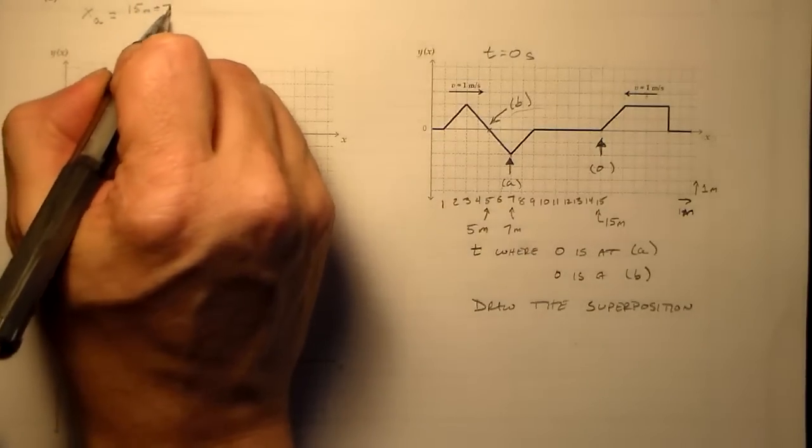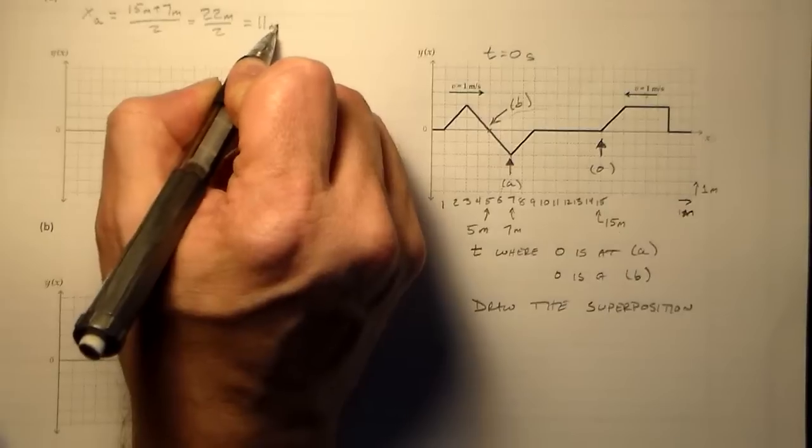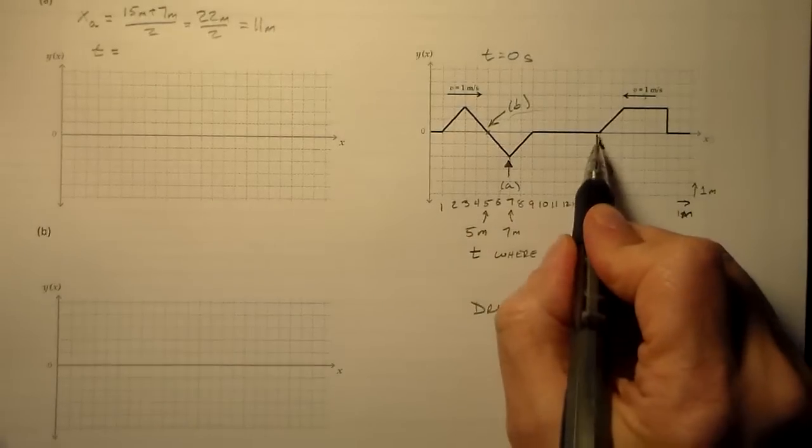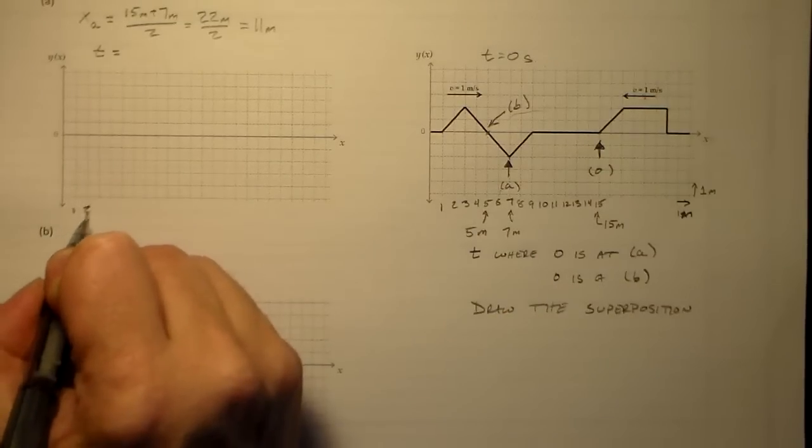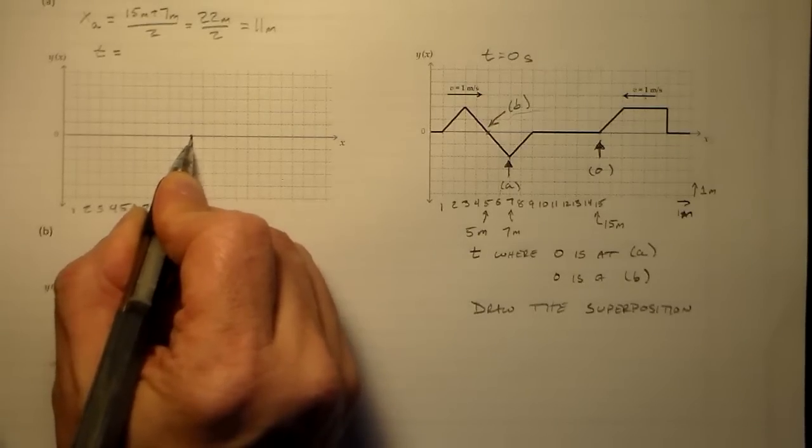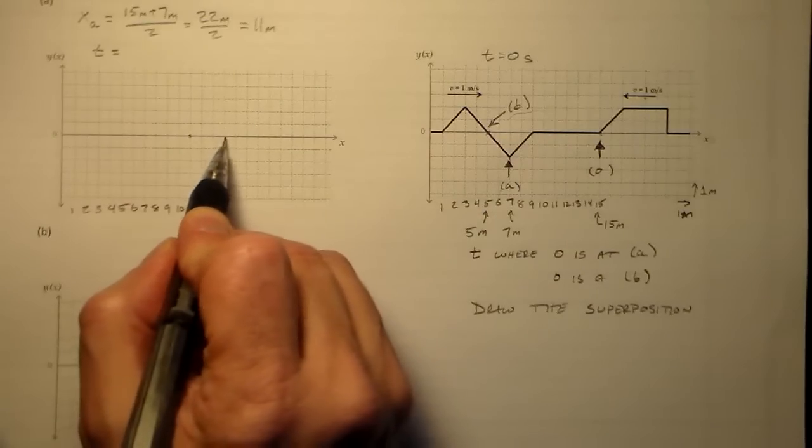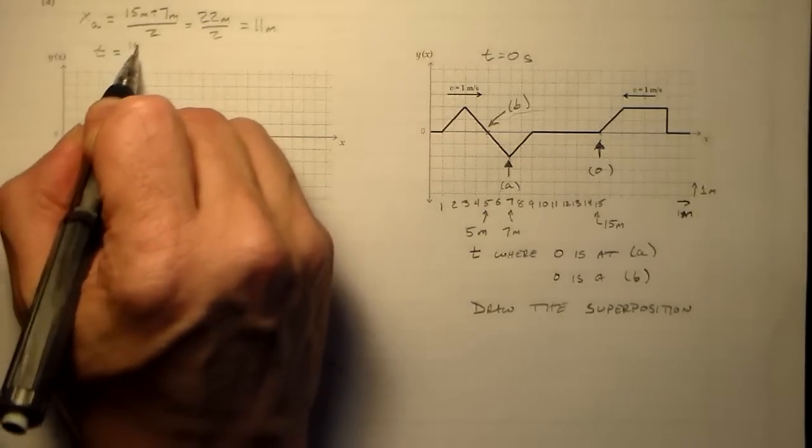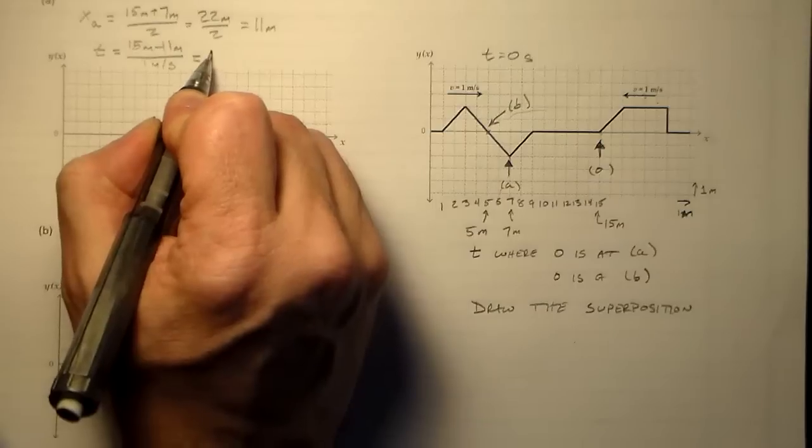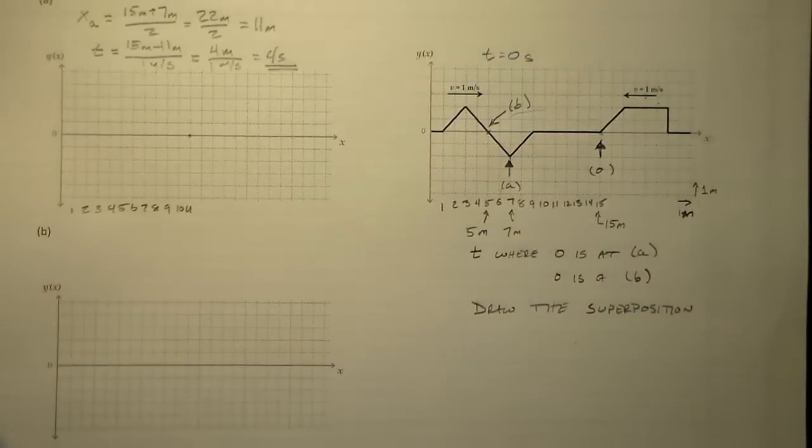And for A, that's seven meters, so plus seven meters over two. This guy is 22 meters over two, which is 11 meters. Simple enough. Then we can find the time by saying, okay, this guy is going to get to 11 meters, right? It's going to get, the tip of this guy is going to be right here. How long is it going to take him to go from 15 meters to 11 meters? Well, that's 15 meters minus 11 meters. He's moving at one meter per second over one meter per second is equal to four meters over one meter per second, which is just four seconds. Okay, so that's the first part of that problem.